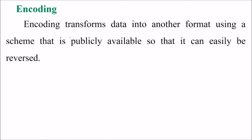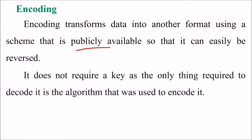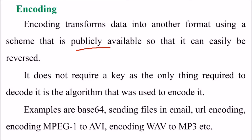Encoding transforms data into another format using a scheme that is publicly available, so that it can be easily reversed. It does not require a key — the only thing required to decode it is the algorithm that was used to encode it. Examples include Base64 for sending files in email, URL encoding, encoding used in MPEG-1 to AVI, and encoding from WAV to MP3.